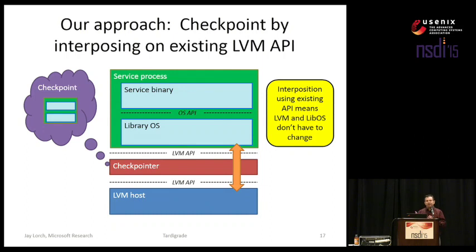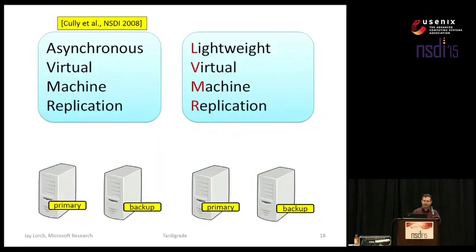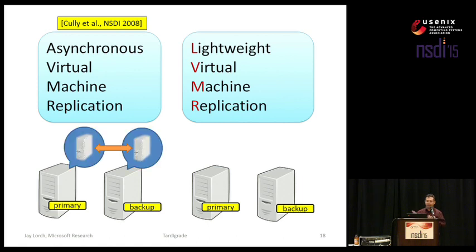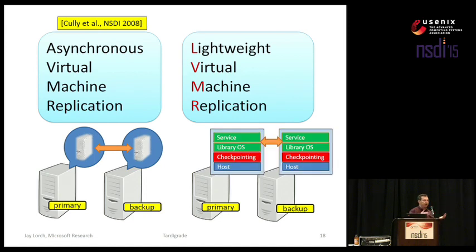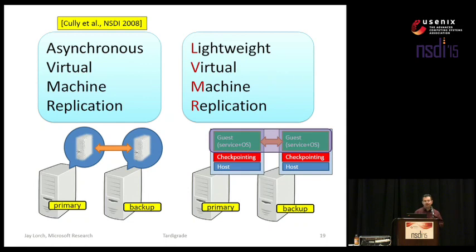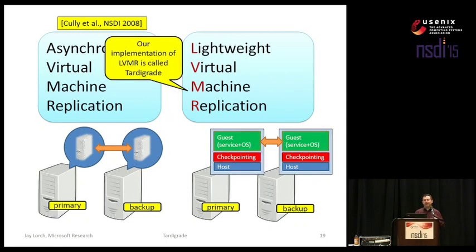You can see now how we go from asynchronous virtual machine replication to LVMR, lightweight virtual machine replication. Instead of running a VMM on both the primary and backup to keep in sync a virtual machine, we run an LVM host and a checkpointer on both sides that will keep in sync a guest — the guest consisting of a service process binary as well as a library operating system. To illustrate the practicality of LVMR, we actually built a prototype, and we call that prototype tardigrade.